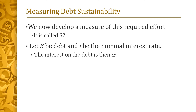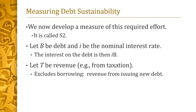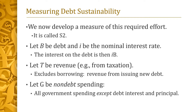As before, let B denote a government's debt, and let I denote the nominal interest rate that it pays on the debt. Its total interest payment is thus I times B. Let T denote the government's revenue. Most of this revenue will come from taxes and fees. T does not include new borrowing — that is, revenue the government receives by selling bonds. Finally, let G denote the government's non-debt spending. This is all spending by the government, except any principal and interest payments on the government's debt.